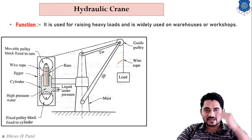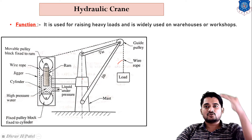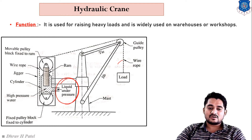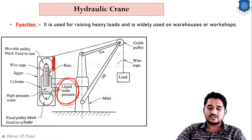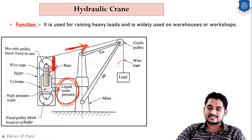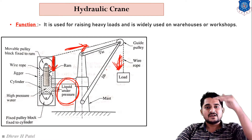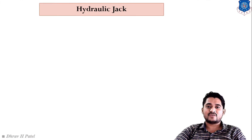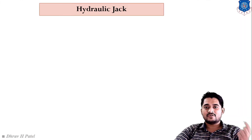Exactly opposite, if we want to reduce the elevation of any load, we remove some amount of liquid. The movable pulley moves in the downward direction, the wire rope moves to the right-hand side, and our load moves in the downward direction. That is the basic purpose of the hydraulic crane — it is used in various warehouses and types of industries.